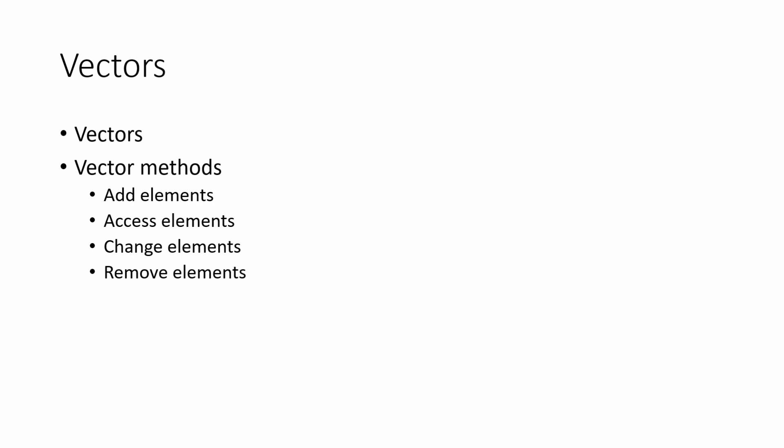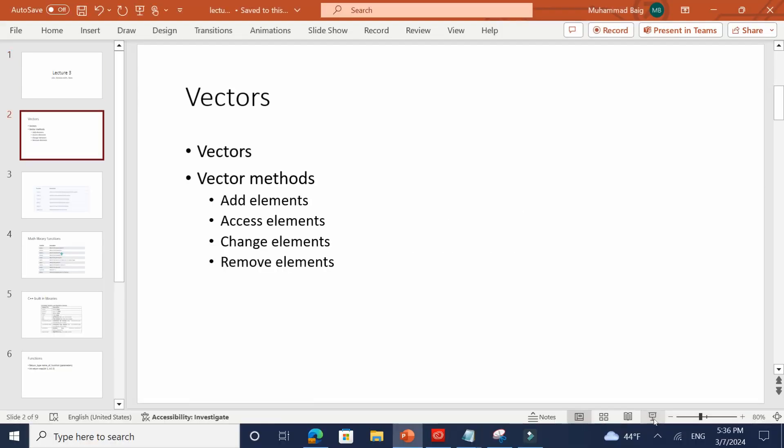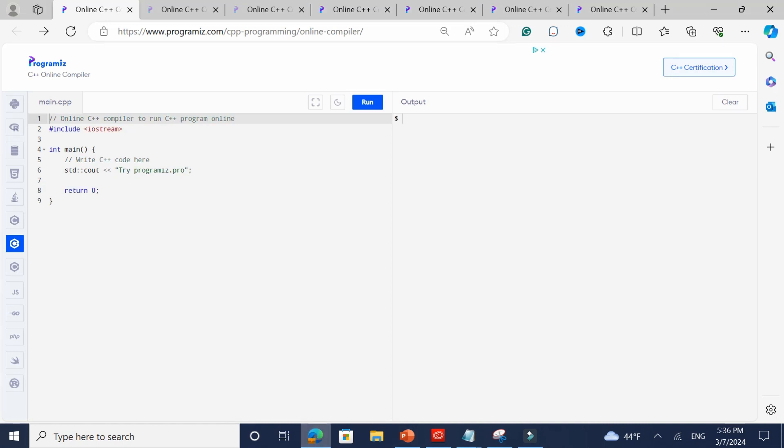You include the vector library and you get all the functions along with it. A vector has a bunch of methods — not limited to but including: add elements, access elements, change elements, remove elements, and move elements. Adding and deletion are simple operations. Let's jump into some examples right away.